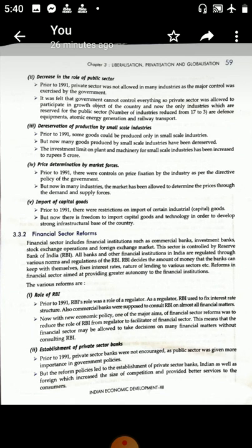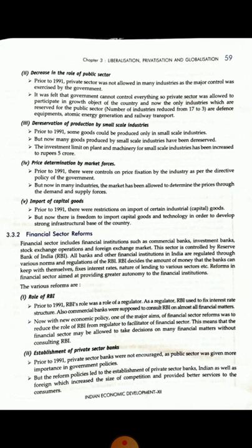The reservation of production by small scale industries: Before 1991, some goods could only be produced by small scale industries. But now, many more goods were given permission for small scale industries to produce. Products were de-reserved so that more people could come forward and set up industries. Also, the limit for plant and machinery investment was raised from one crore to five crores.